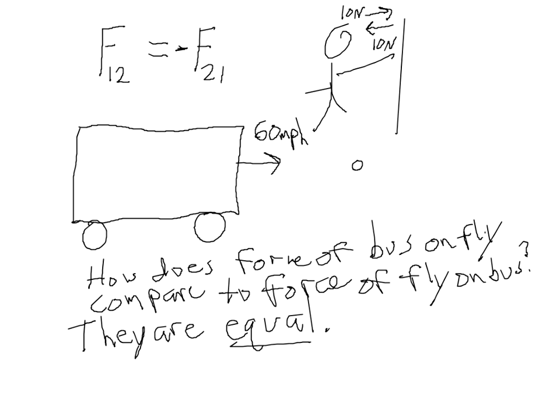Let's talk about how Newton's Second Law works together with Newton's Third Law to make this situation make sense. Newton's Second Law says the net force on an object equals its mass times its acceleration. According to Newton's Third Law, the force of the bus on the fly and the force of the fly on the bus have to be equal. What does not have to be equal are the masses and the accelerations.